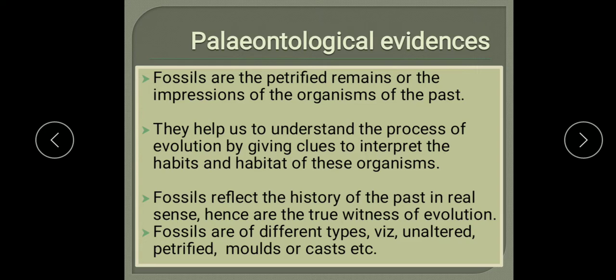In the fossilization process, when both external and internal structures are preserved, it is called petrification. Compressions are formed as a result of burial of plants or their parts in sediments — here we study the external morphology of plants. Encrustation preserves the external forms of plants but the internal structures are destroyed. Impressions are formed when an organism or its parts come in contact with soft clay, and are useful for studying external features.